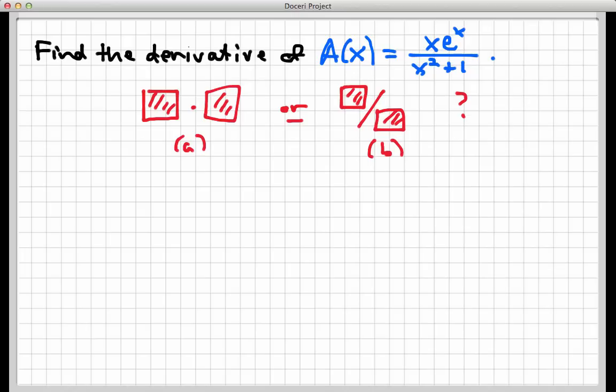Well, when you look at the structure of this function, I don't really have two functions times each other. I have two functions that are divided by each other. I have this function on the top, and then I have this other function on the bottom. On the outermost level of structure, in other words, this function is a quotient. It's not really a product.